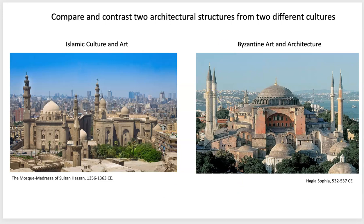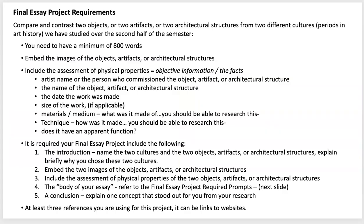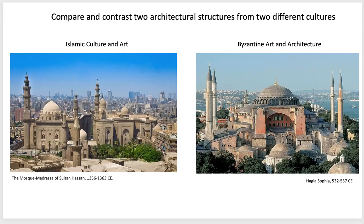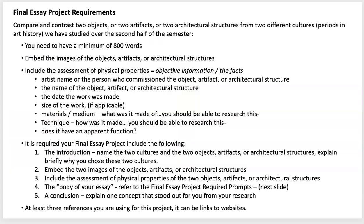That's the basis for your final project essay, and these are the requirements you'll need to follow. Your paper needs to be a minimum of 800 words. You're going to embed at least two images — just like shown here — so if you choose architecture, you'll embed examples of that architecture.